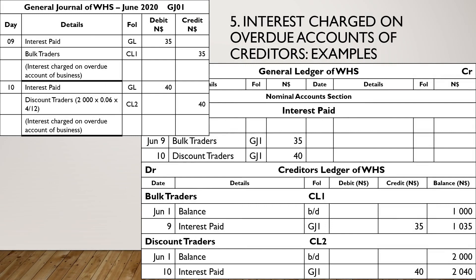Interest charged to overdue accounts of creditors: debit Interest Paid with the details being the creditor's name — Bulk Traders — and we credit Bulk Traders with details Interest Paid. Again: debit Interest Paid, details Discount Traders the creditor, and credit the creditor with details Interest Paid.